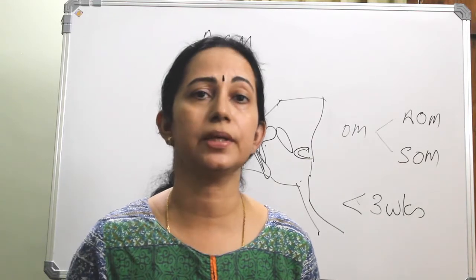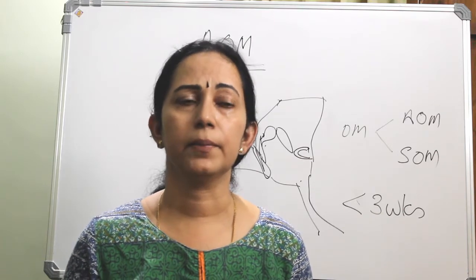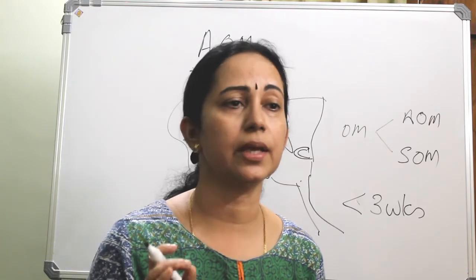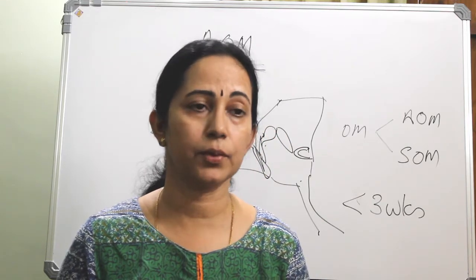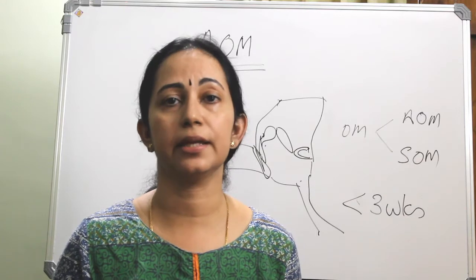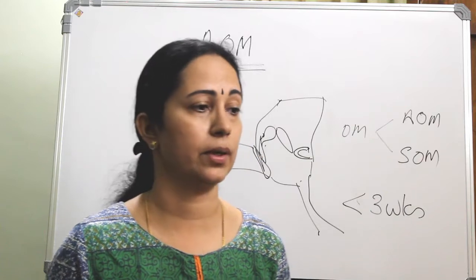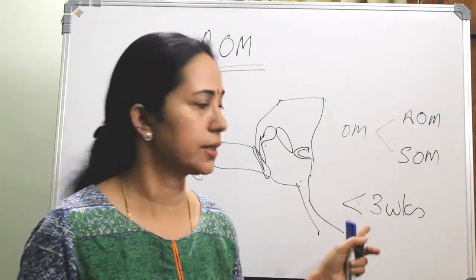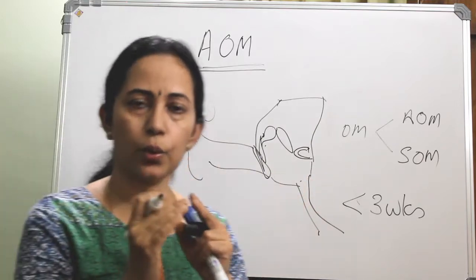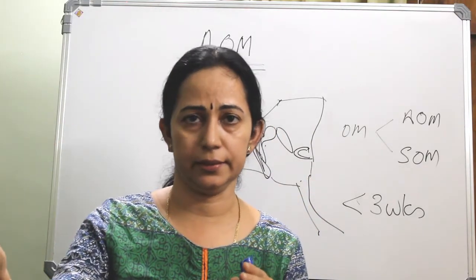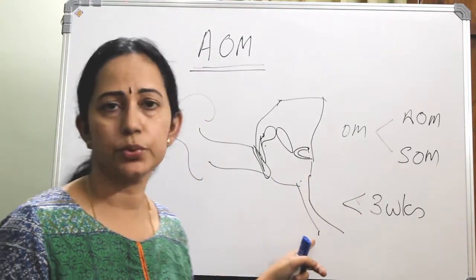It is more commonly seen in children around two years of age than in adults, because there are some differences between an adult eustachian tube and an infant eustachian tube — already discussed in the class on anatomy of the eustachian tube. The main risk factor is the only sole opening from exterior into the middle ear space, which is through the eustachian tube.